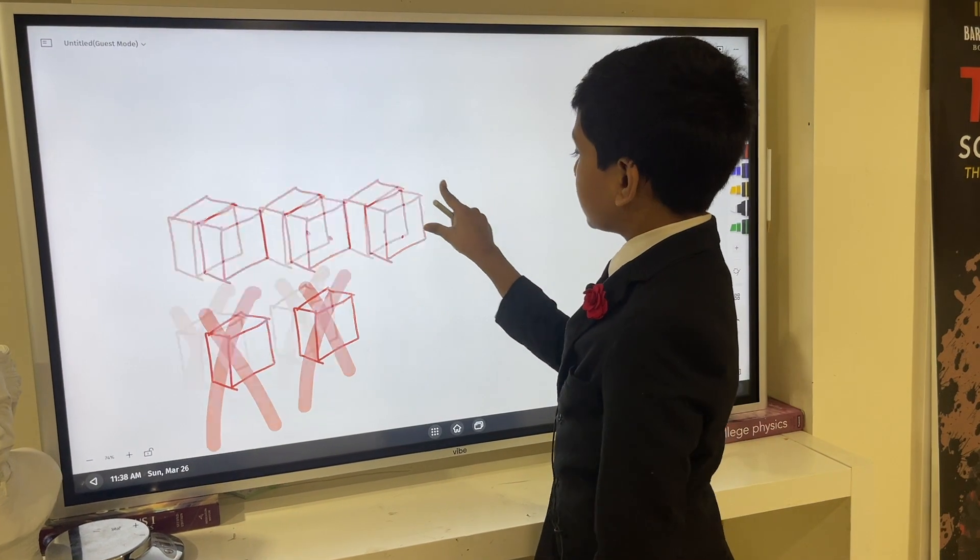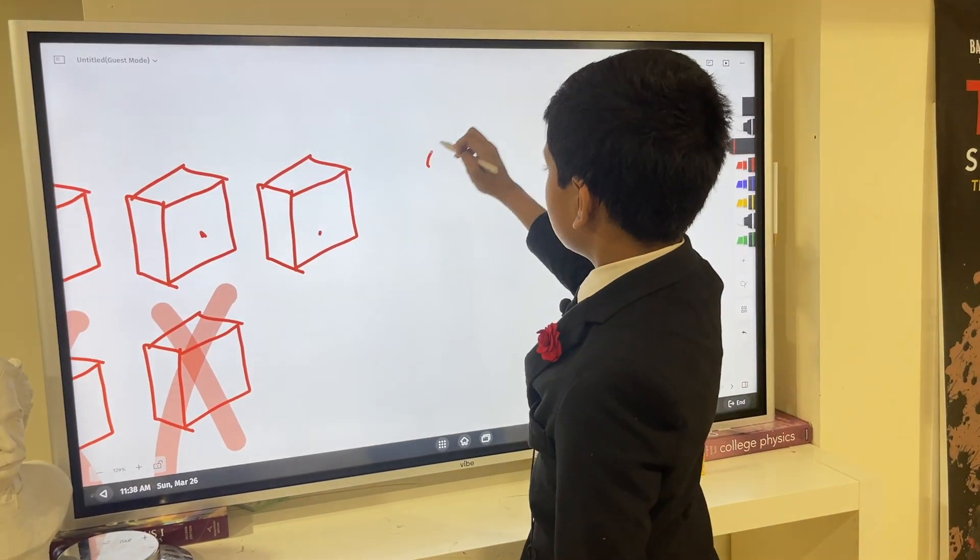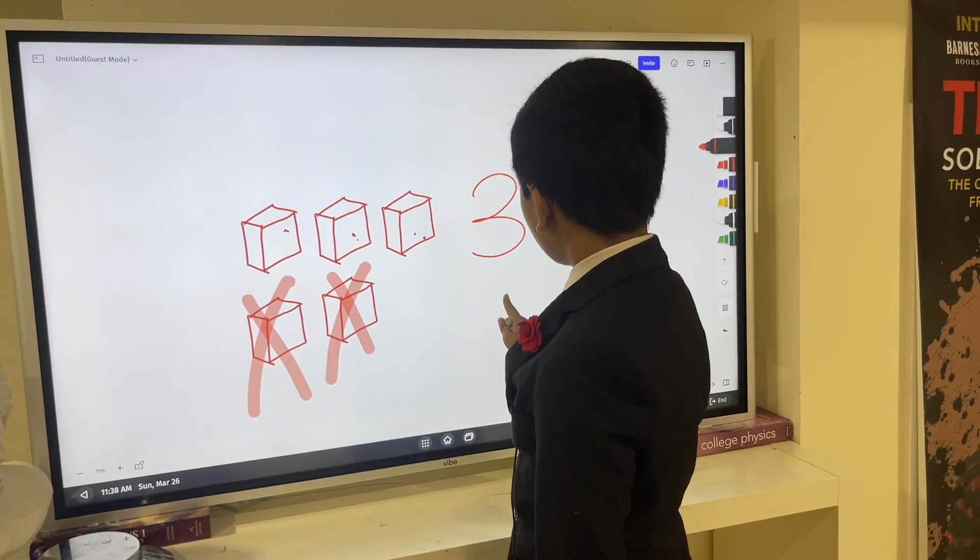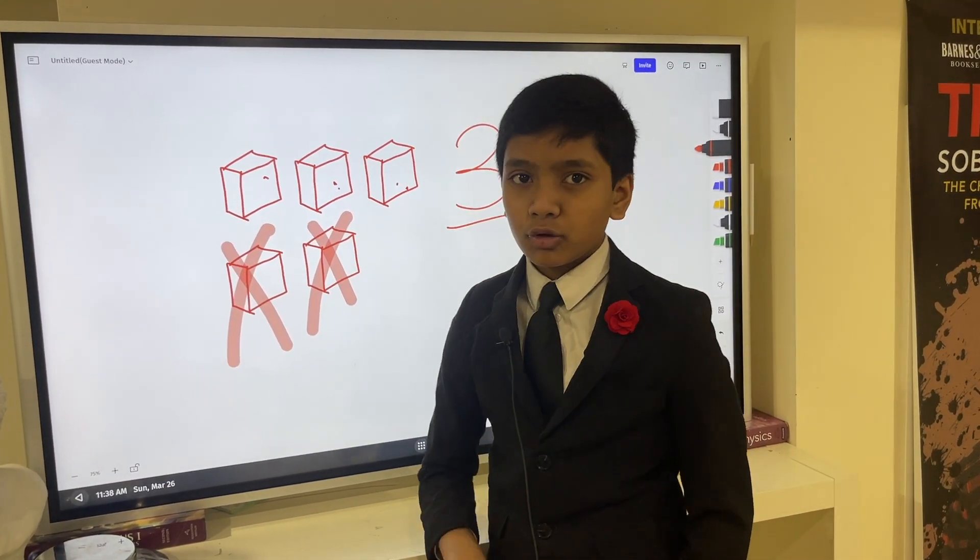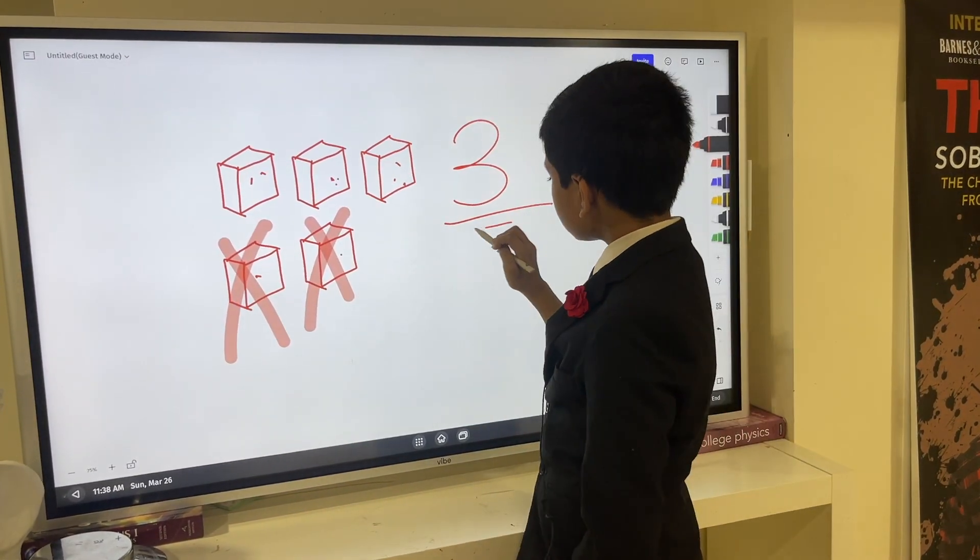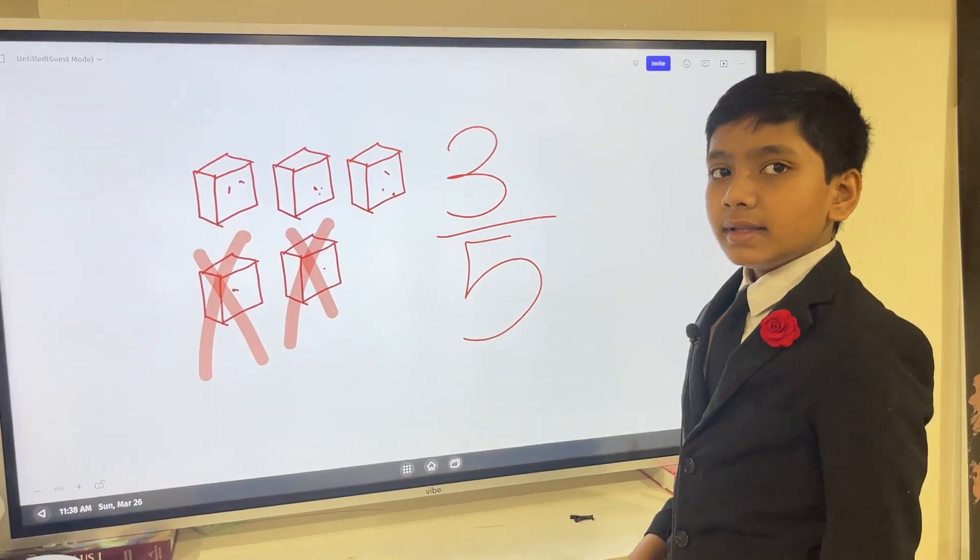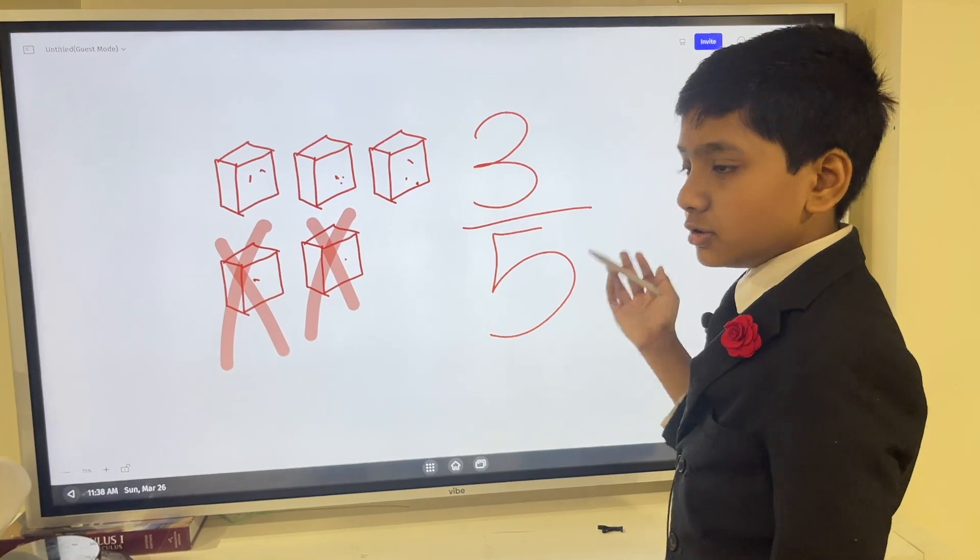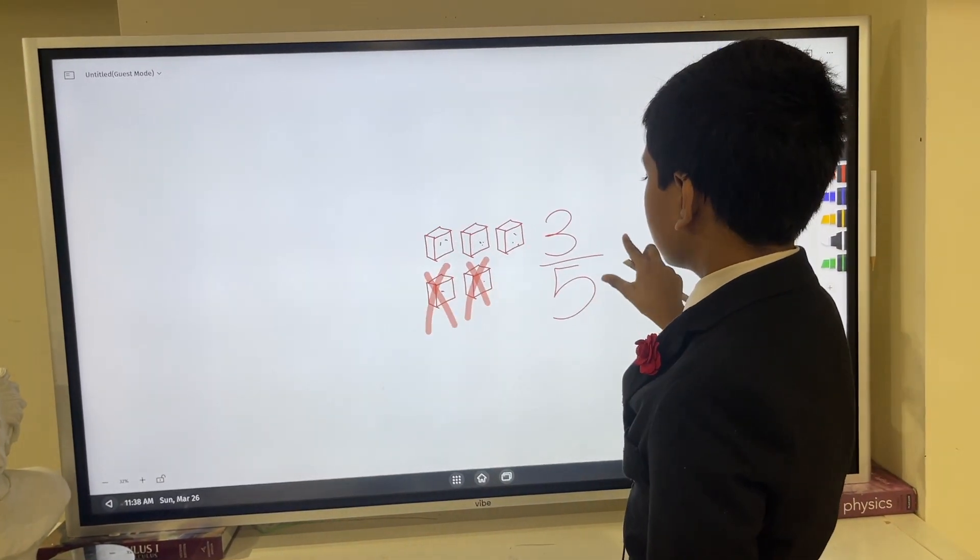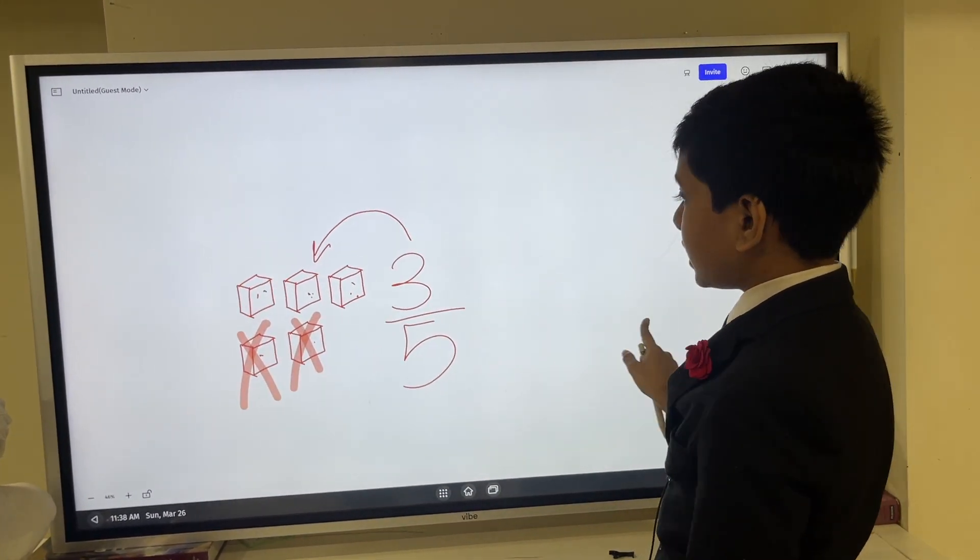Now, how can we make this a fraction? Well, this is three out of how many were there originally? One, two, three, four, five. Three out of five. So this basically shows you something like this. So three over five can be used to express something like this.